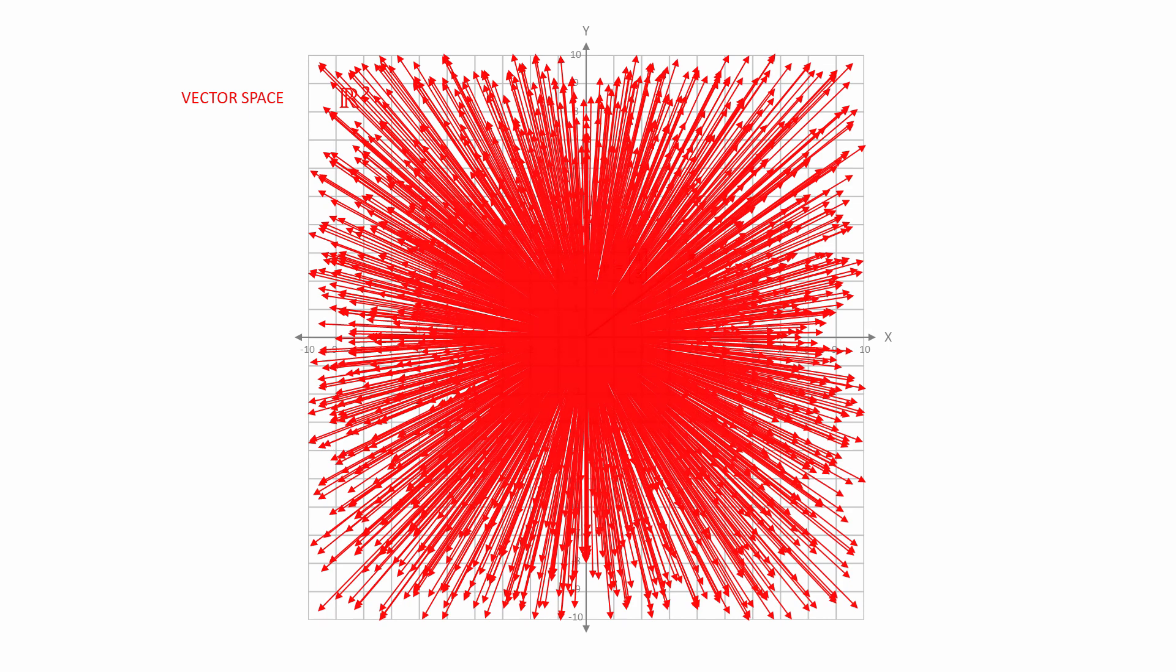But these vectors are all the same, because they all have the same magnitude, and they all point in the same direction. Any two free vectors with the same length, and that are parallel to each other, can be considered identical.